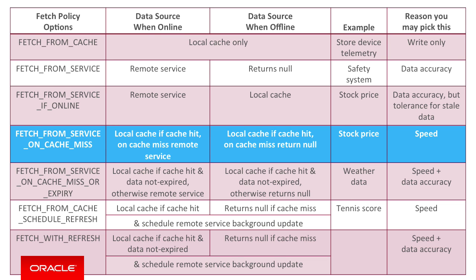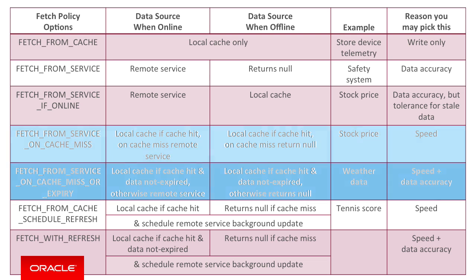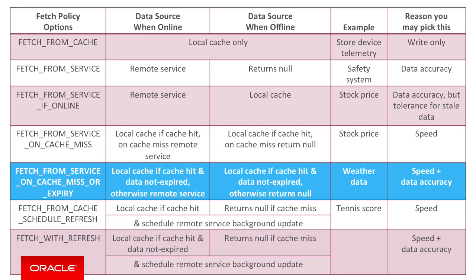The fetch from service on cache miss or expiry option places the same emphasis on retrieving data from the cache for speed before fetching from the remote service. But if the data is not found locally, or the data has expired, the preference shifts to accurate data fetched from the remote server.